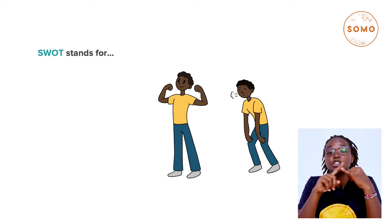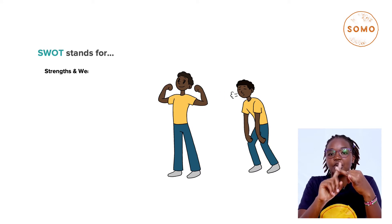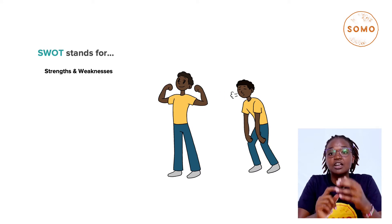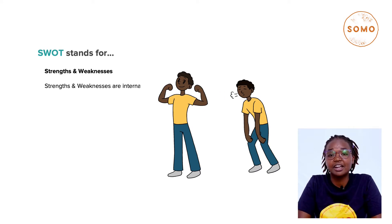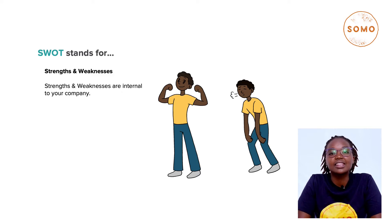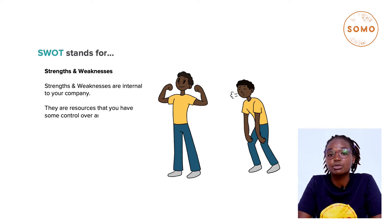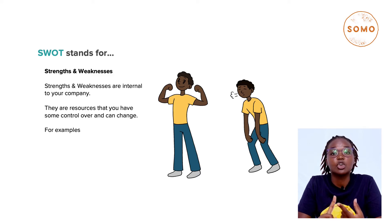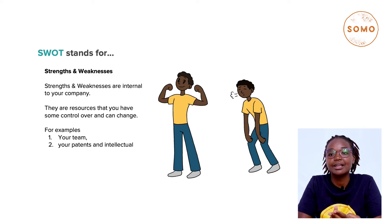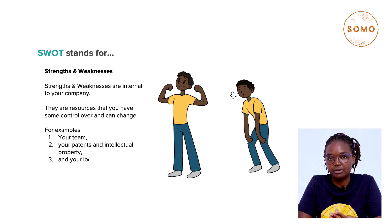SWOT stands for Strengths and Weaknesses. Strengths and Weaknesses are internal to your company. These are resources that you have some control over or can change. For example, your team, your patents and intellectual property, and your location.